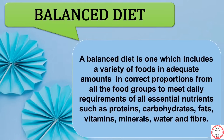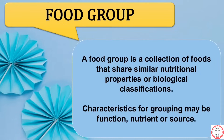Moving on to our next term, balanced diet. It is a diet which includes a variety of foods in adequate amounts and correct proportions from all the food groups to meet the nutritional requirement of an individual. Next, food group is a collection of foods that share similar nutritional properties or biological classifications. The parameters on which food groups are divided can be function, nutrient, or source.